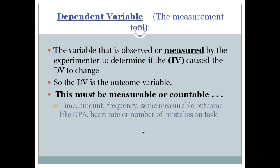Time. Reaction time. The amount of something. How often something happens. GPA is an example of something we can measure. We can measure heart rate, perspiration rate, scores on tests.